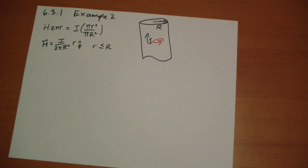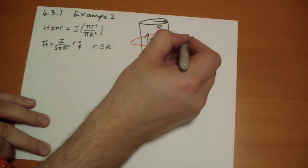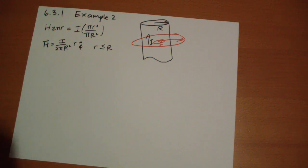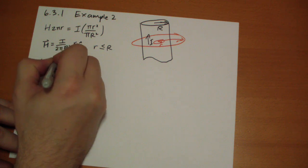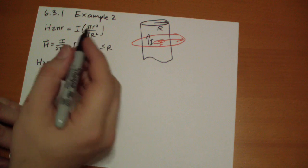Outside, so let's take another amperian loop here. So we get H 2 pi r is equal to I, and the total current enclosed is just I.